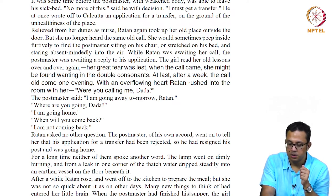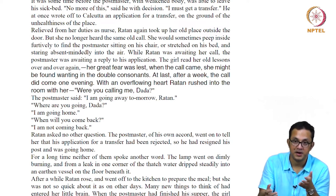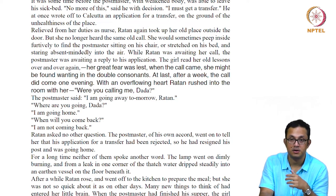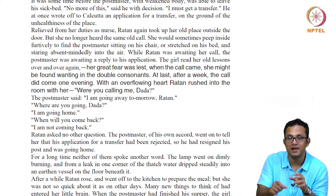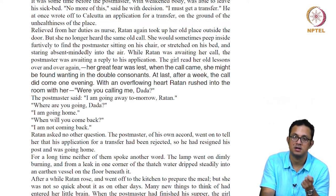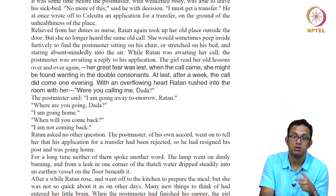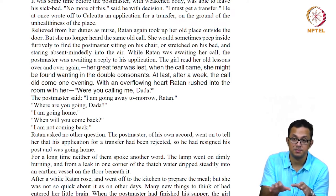After a while, Ratan rose and went off to the kitchen to prepare the meal, but she was not so quick about it as on other days — a degree of inertia had crept in. She was dragging her feet, resigned to the fact that he is going away. Two different kinds of resignation are at work: one official and business-like, the other more human and existential. And we have seen earlier how two different kinds of waiting were also in operation — one bureaucratic, the other existential.